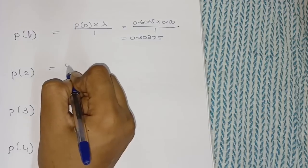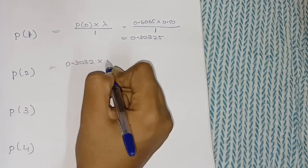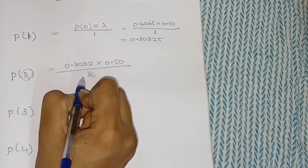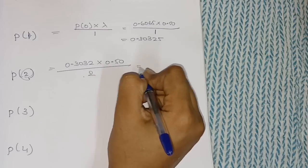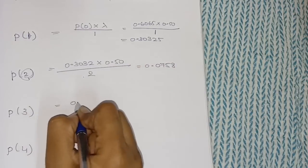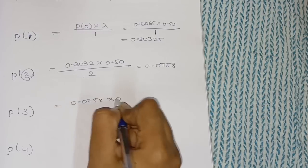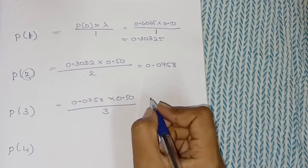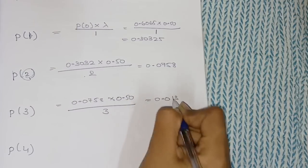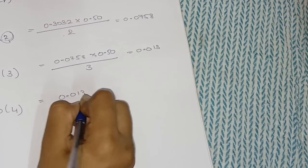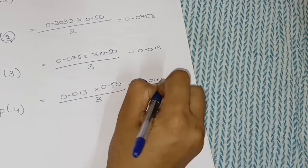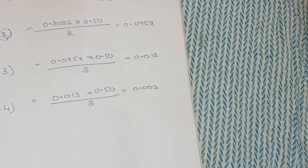Continuing the calculations: P(2) = 0.30325 × 0.50 ÷ 2 = 0.0758. P(3) = 0.0758 × 0.50 ÷ 3 = 0.013. P(4) = 0.013 × 0.50 ÷ 4 = 0.002. Like that you need to do for however many x values you have. This completes Step 2.